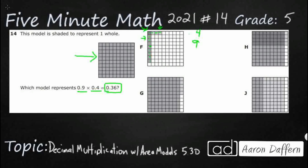But here's the problem with F. That four is 0.04 — 4 hundredths. Look at this hundredths grid. We're trying to find 4 tenths, but what we have here is 4 hundredths. Same with that nine — it's actually 9 hundredths, but we're trying to find 9 tenths. Big difference: 9 tenths means 9 out of these 10 rows would be completely shaded in. So what we have here is 4 hundredths times 9 hundredths, which gives 0.01 — not correct. So the answer is not F.